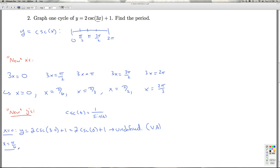Substituting x = π/6, y is 2csc(3·π/6) + 1, which is 2csc(π/2) + 1. The cosecant of π/2 is 1 over the sine of π/2. Since sine of π/2 is 1, I get 2·1 + 1 = 3.